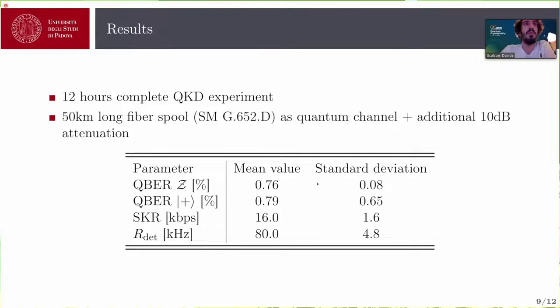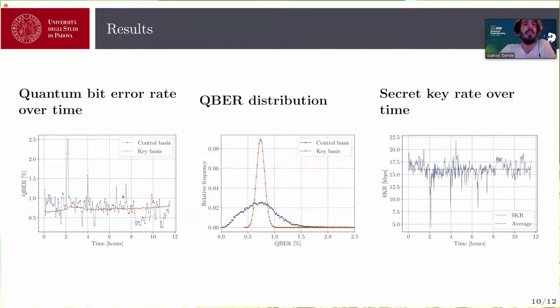So we performed an experiment over a 12-hour experiment using a 50-kilometer long fiber spool with additional 10 dB attenuation. And those are the average results. So the QBER mean is under 1% in both bases. We achieved an average SKBR of 60 kilobits per second with having a detection rate of 80 kilobits per second. Here you can see how it went. So you can easily see that the fluctuation in the control basis are way greater because we need to actually compensate the phase. Instead, in the key basis, there are no fluctuations. I mean, they are really smaller compared to the other one. The same thing can be seen in the central plot in which I plotted the distribution of the QBER for the two bases. And you can see also that the fluctuation in the control basis are reflected in the secret key rate fluctuation.